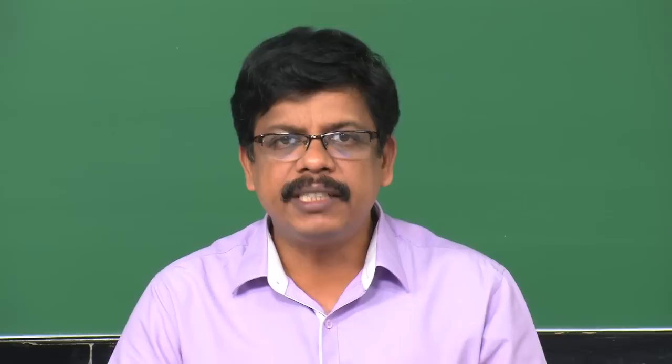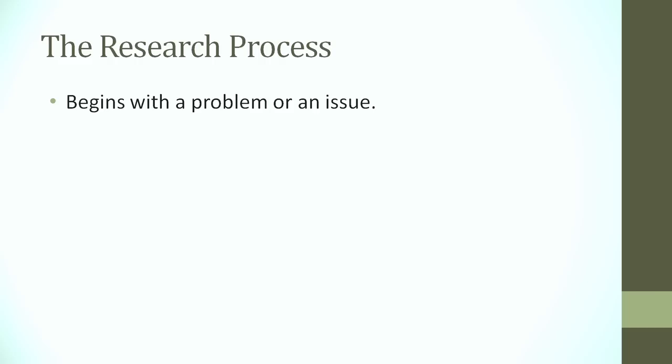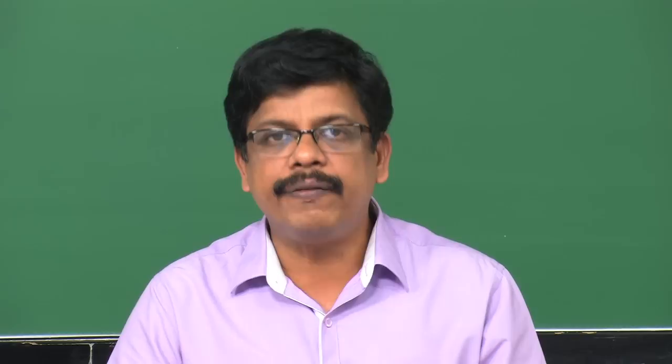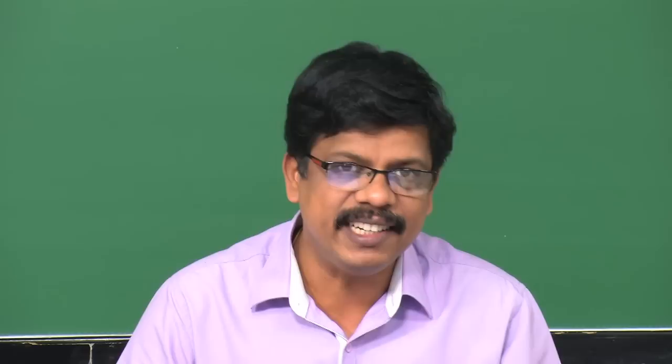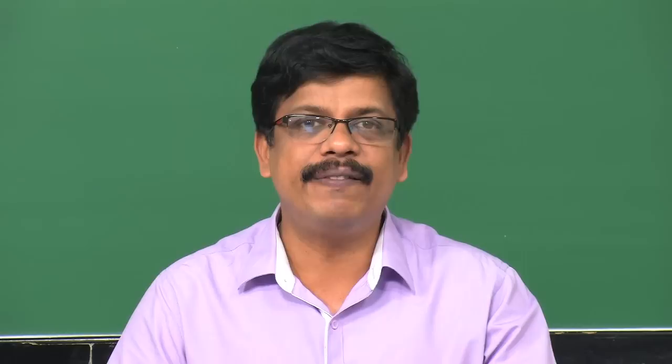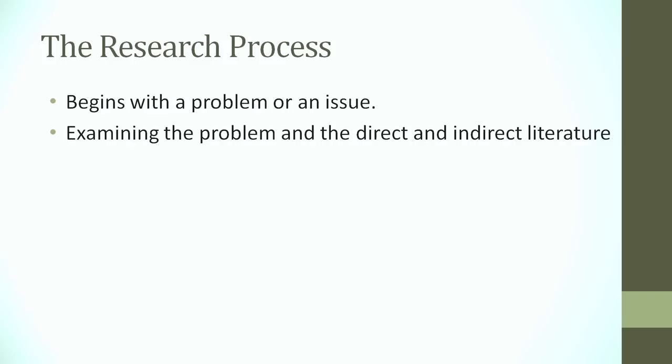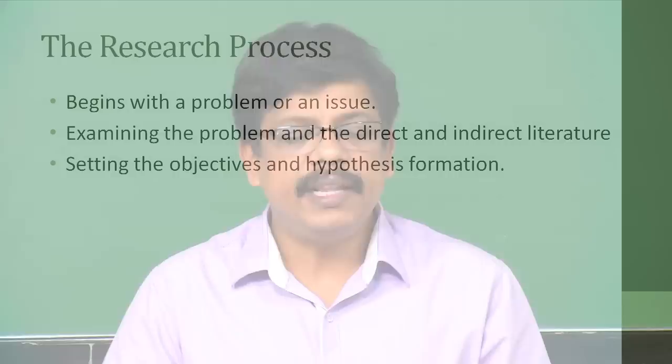Let us see the research process. This is not a very scientifically classified account — it is just a commonsensical account. We begin with a problem or an issue normally. Usually the researcher starts with a problem, and quite often ethics becomes important here itself. Many of these issues a researcher tries to understand would be resolving issues in society, which would drastically improve sometimes the lives of people. We then examine the problem and the direct and indirect literature — what we call a literature review — to understand the problem from the right perspective.